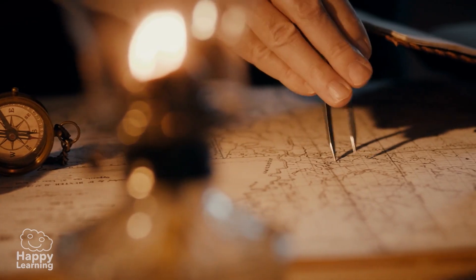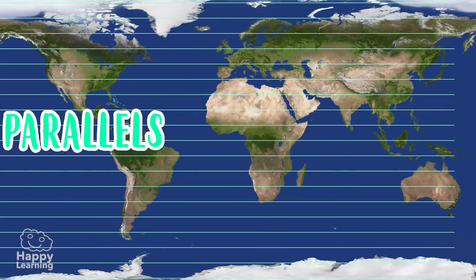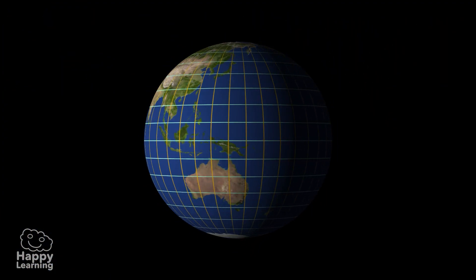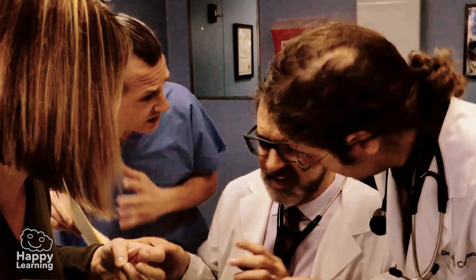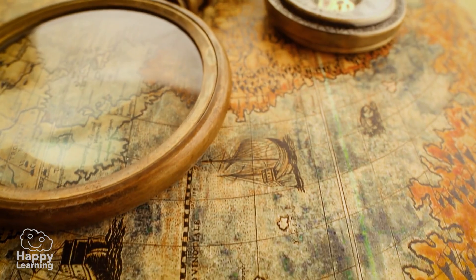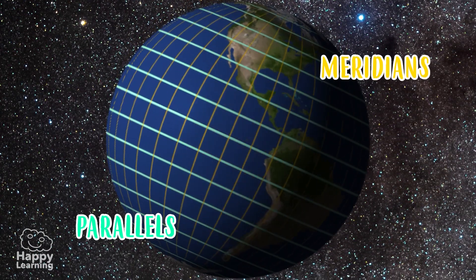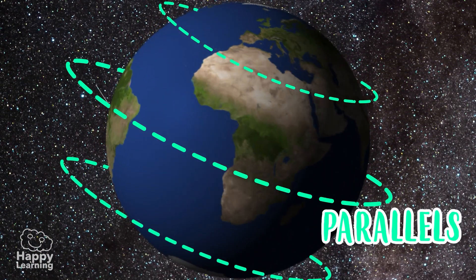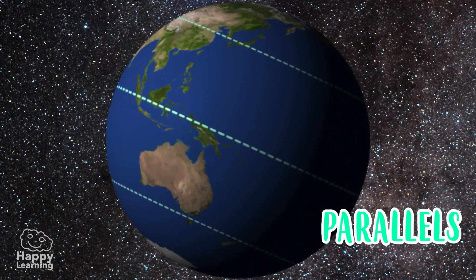Today we're going to learn about imaginary lines called parallels and meridians. Many, many years ago, earth scientists decided that in order to understand the earth better, it was a very good idea to create imaginary lines. These imaginary lines have a name — they are called parallels and meridians. Parallels are circular lines that encircle the planet from east to west. You know that these lines don't really exist, right? They're just imaginary.